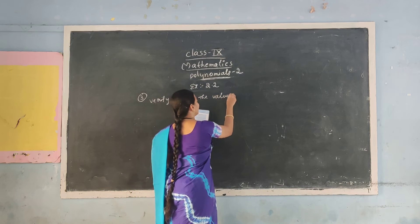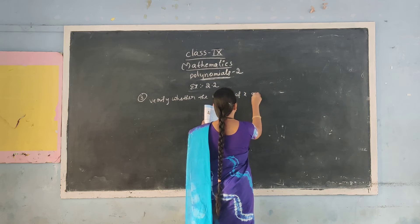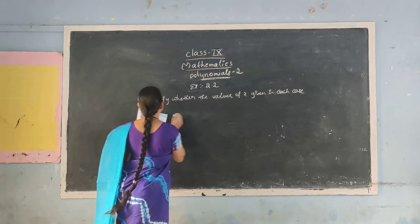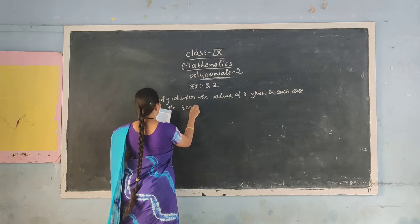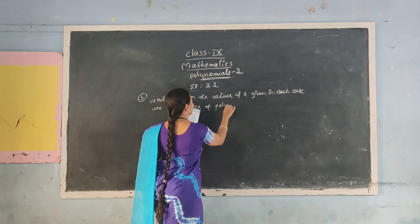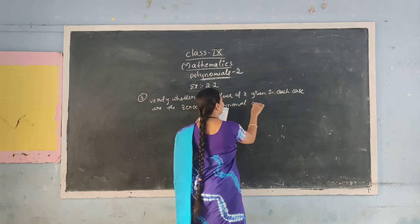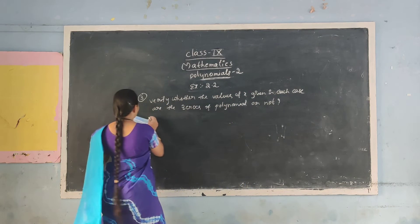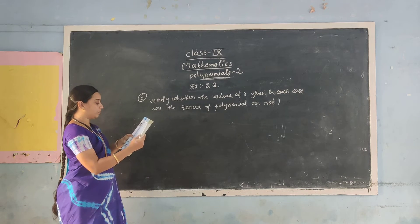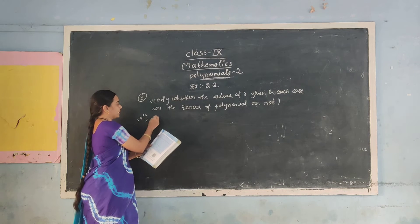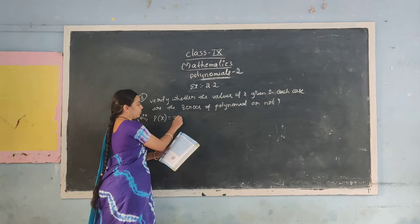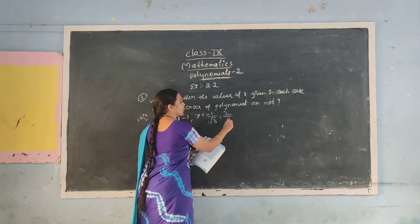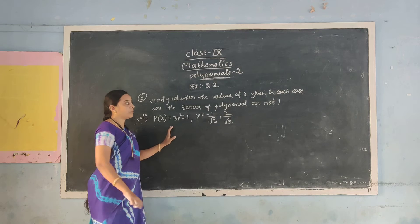Next, verify whether the values given in each case are the zeros of the polynomial. There are 8 sums here, and I have to take only one sum — that is question number 7: P(x) = root 3 x squared minus 1, with x = minus 1 by root 3 and 2 by root 3. Roots are there, so that's why I have to solve this sum. Remaining 7 sums we should take home.